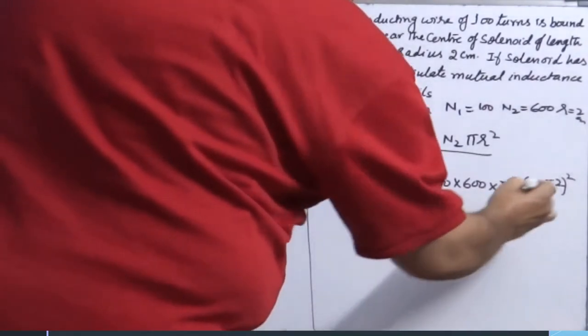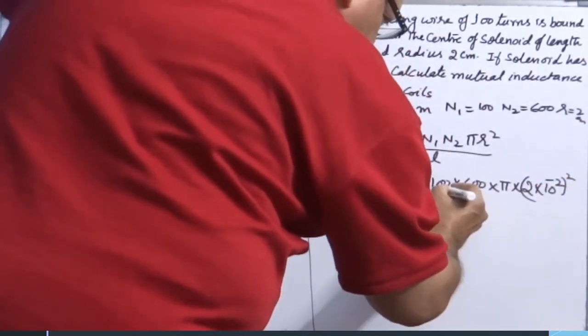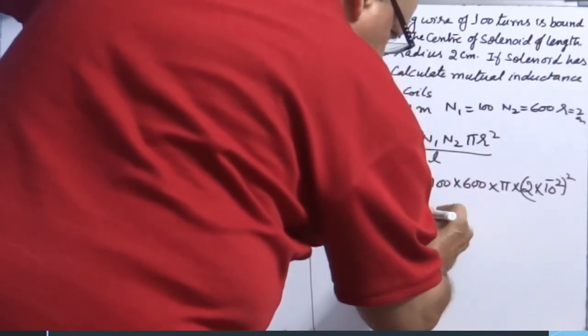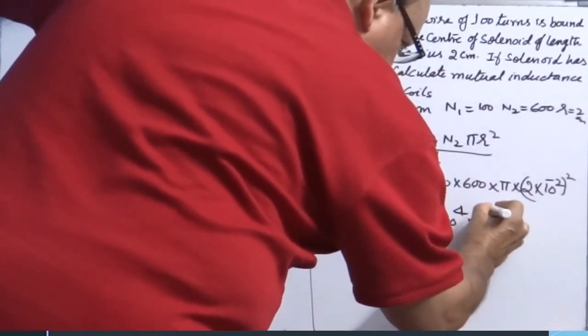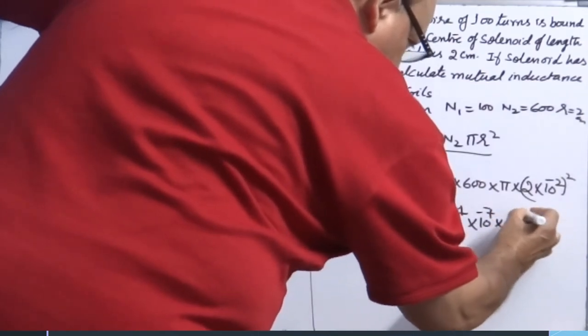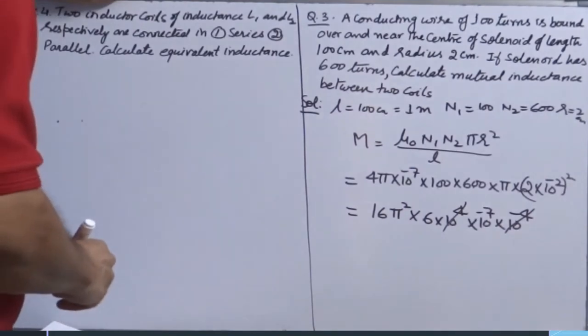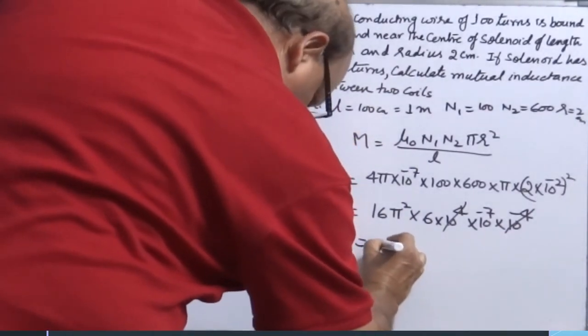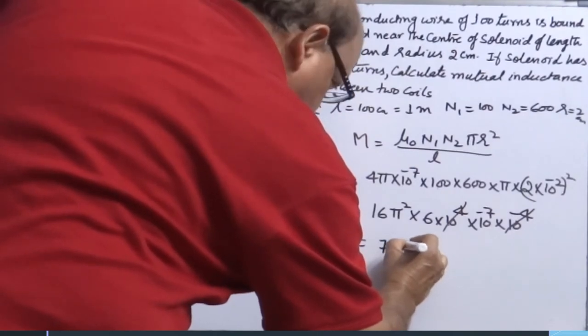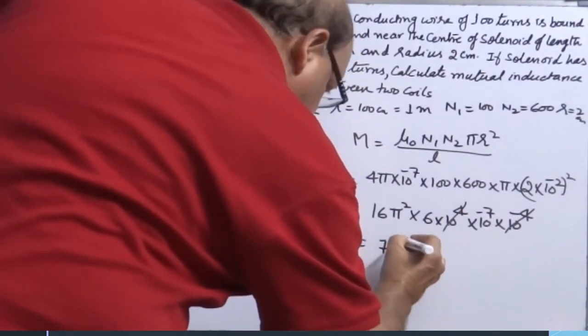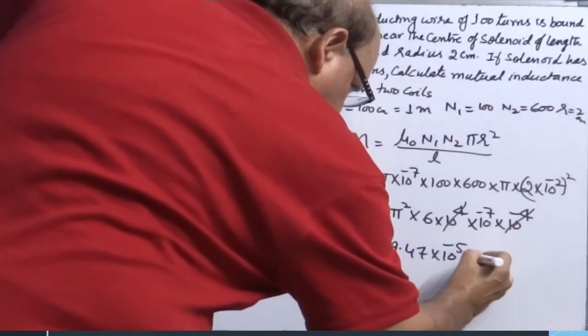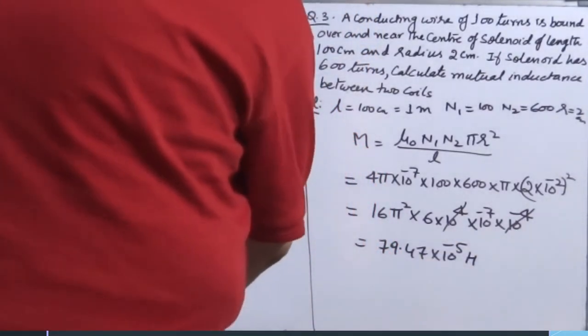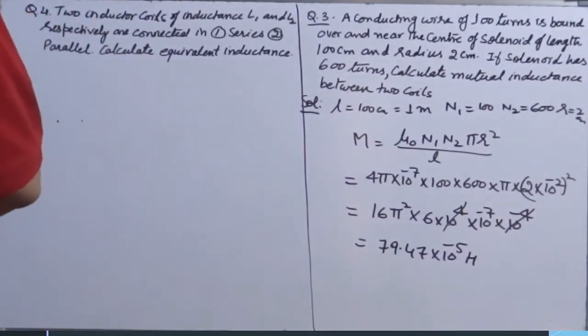So when you solve this comes out nearly 16 pi square into 6 times 10 to the power 4. 4 times 10 to the power minus 7 into 10 to the power minus 4. When you calculate it comes out 7.947 times 10 to the power minus 5, and you can say 7.9 times 10 to the power minus 4.